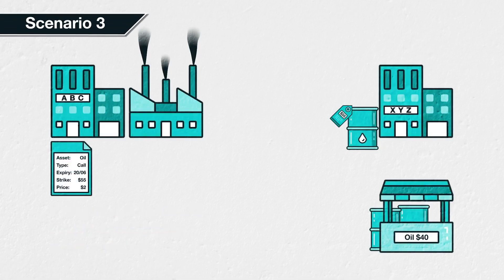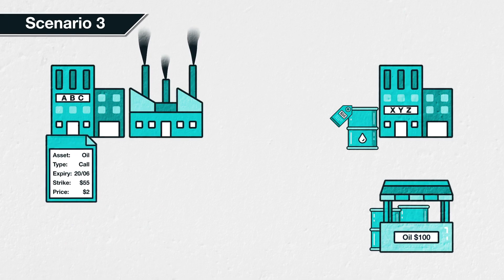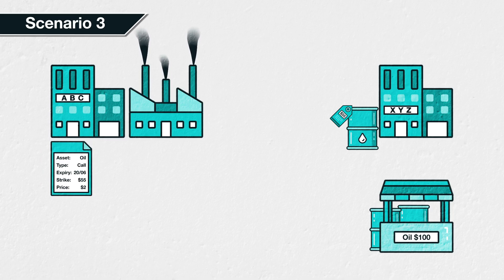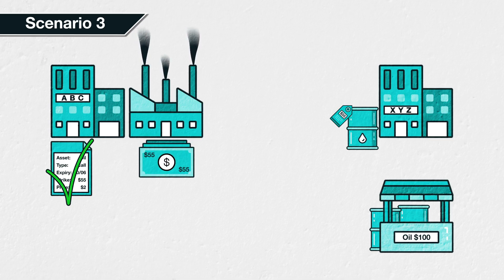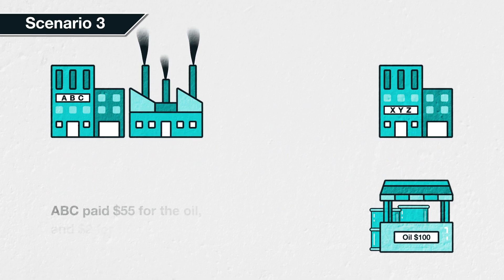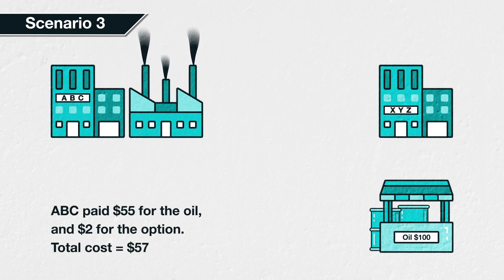Scenario 3: The price of oil has increased to $100 per barrel on June 20th, and ABC is now ready to make their purchase. The call option gives them the option to buy oil at the strike price of $55 per barrel. Because the price of oil is now $100 in the open market, it is much more preferable to use the option to purchase it at $55 from XYZ. ABC therefore exercises the call option, paying $55 per barrel. They also paid $2 per barrel for the call option, so their total cost is $57. Although the price of oil has increased dramatically, the call option has kept the total cost limited to $57 — still below the $60 threshold, so the project is still viable and profitable.